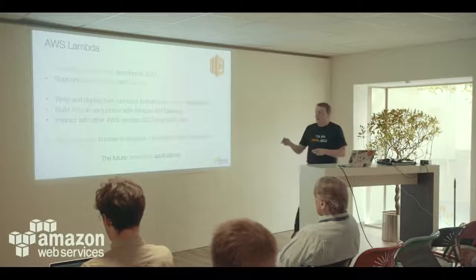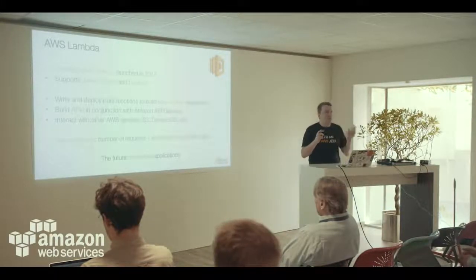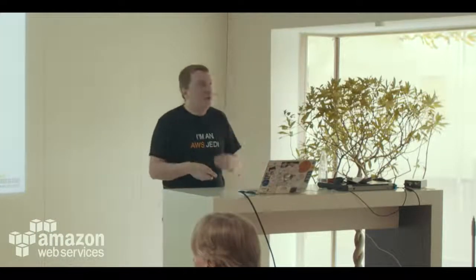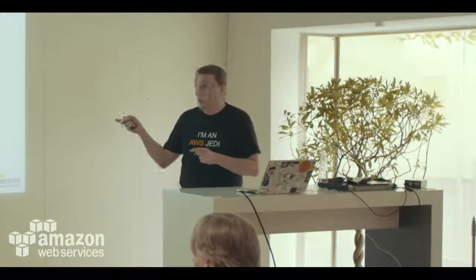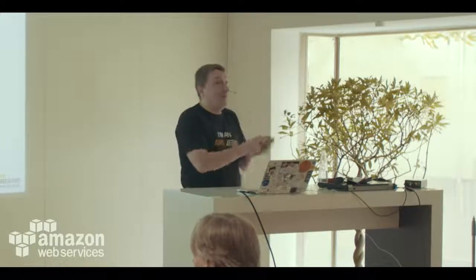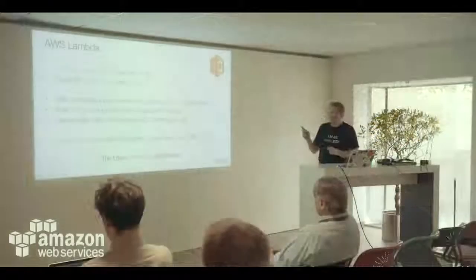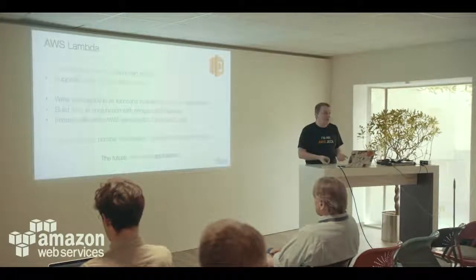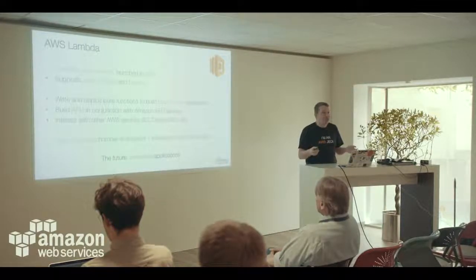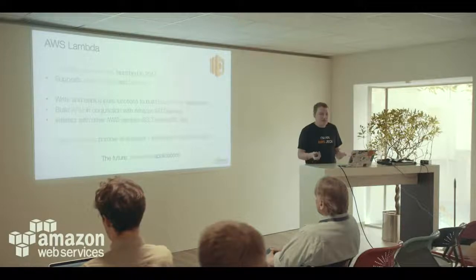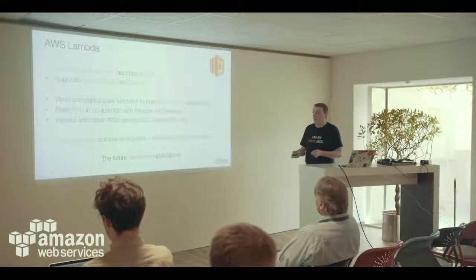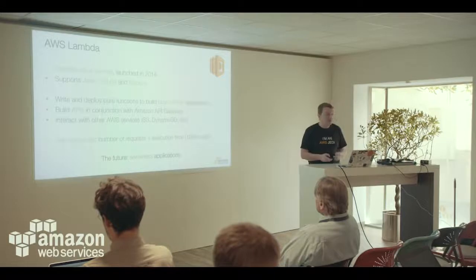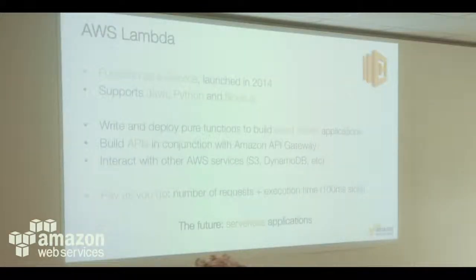The second use case is building APIs. APIs are smaller, self-contained pieces of code that fit the Lambda model well. We combine Lambda functions with API Gateway to build APIs — great for web services, backends, mobile backends, and RESTful APIs without messing with infrastructure. Lambda has a different pricing model: you only pay when the function is called — a combination of number of requests and execution time, billed in 100-millisecond slots, not by the hour. Lambda functions have a five-minute timeout.